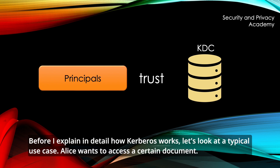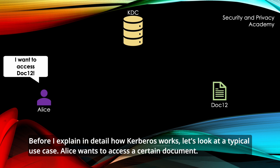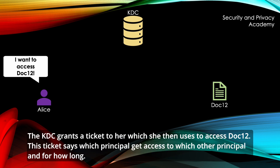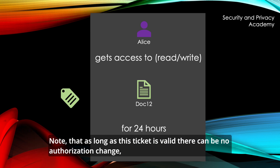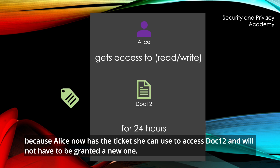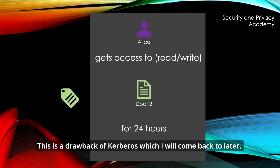Before I explain in detail how Kerberos works, let's look at a typical use case. Alice wants to access a certain document. The KDC grants a ticket to her, which she then uses to access DOC12. This ticket says which principal gets access to which other principal, and for how long. Note that as long as this ticket is valid, there can be no authorization change, because Alice now has the ticket she can use to access DOC12 and will not have to be granted a new one. This is a drawback of Kerberos, which I will come back to later.